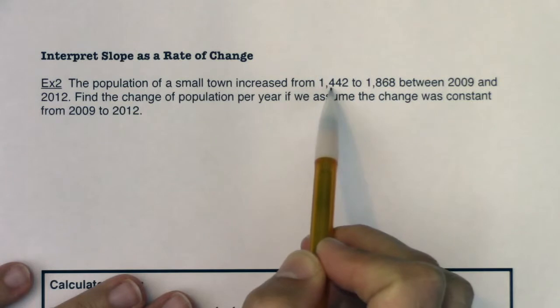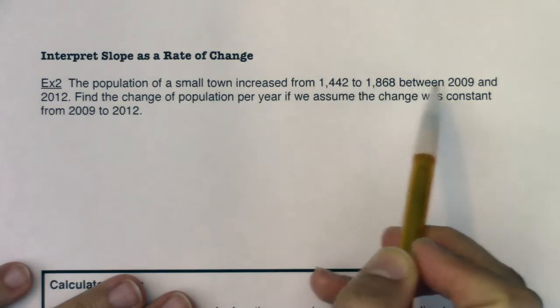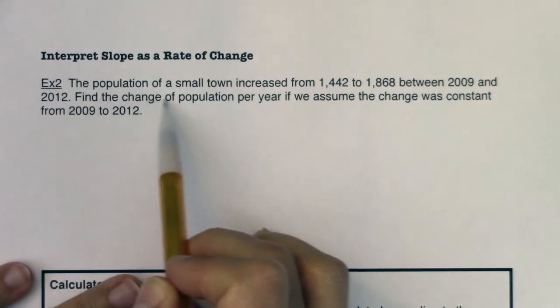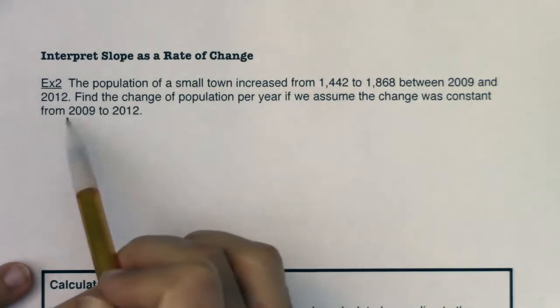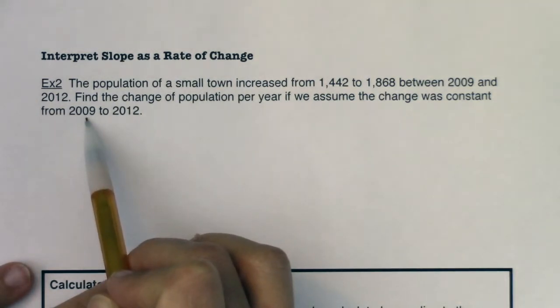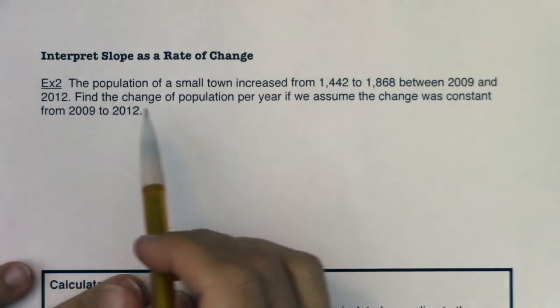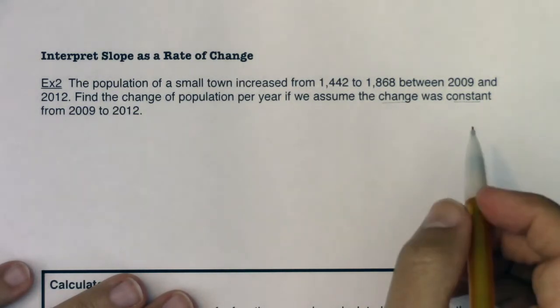increased from 1,442 to 1,868 between the years 2009 and 2012. Find the change of the population per year if we assume the change was constant from 2009 to 2012. A couple things I want to point out: they're telling us right here change was constant. Anytime you hear a change was constant, it's implied